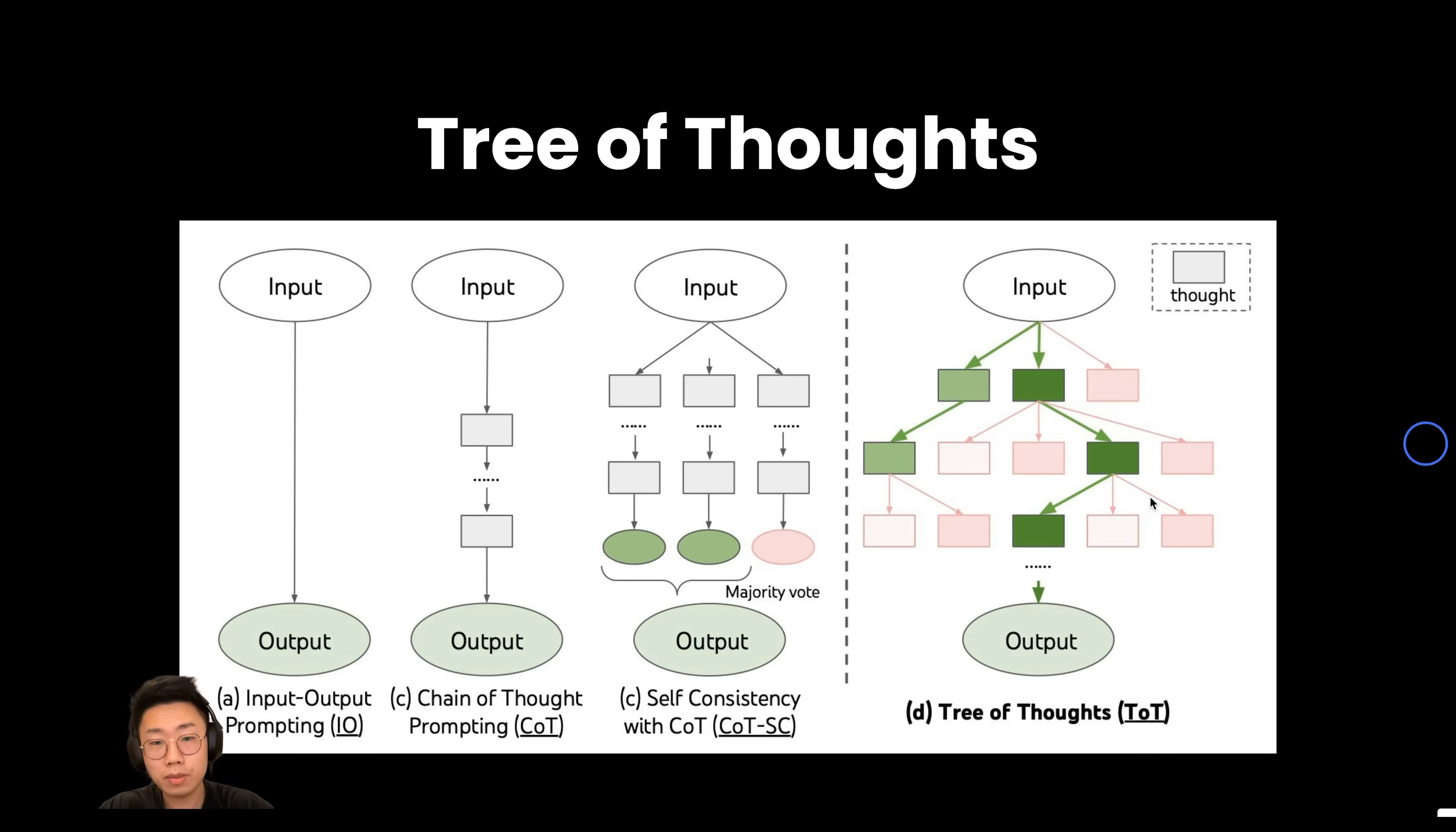And also keep a state about all the paths that it has explored so far. So that if the path it is on doesn't really lead to the outcome they want, then they can trace back and find the second best solution.